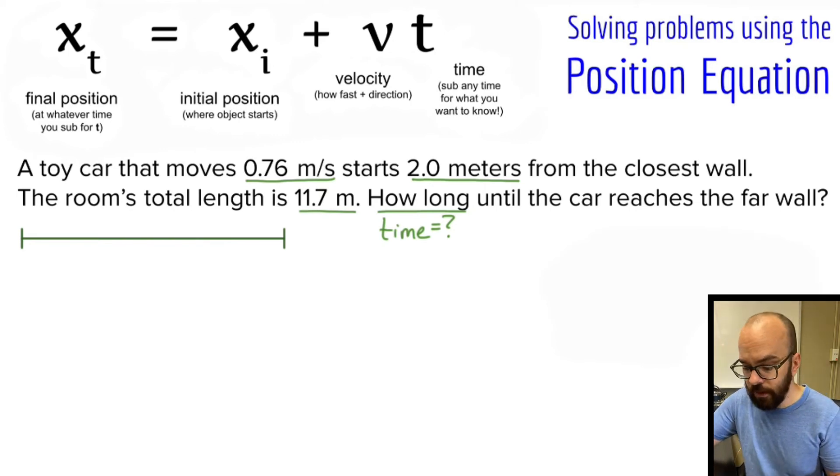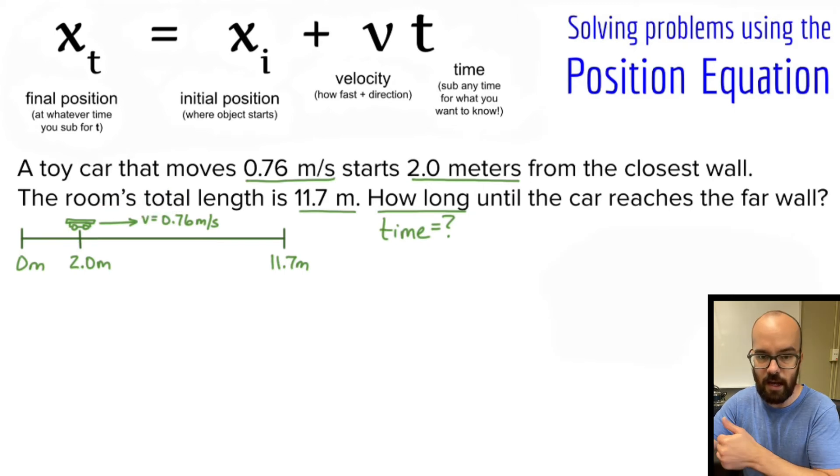Here I have the total length of the room. Let's define this as the zero position - that's going to be the close wall. And the far wall then would be at a position of positive 11.7 meters. So this whole length right here is 11.7 meters. Now the car starts 2.0 meters from the closest wall, so I'm going to write where that car's starting position is at 2.0 meters from here. Think about this like a number line: this is at a position of zero, car starts at position two, and then the far wall is at position 11.7. I know my car is moving 0.76 meters per second in this positive direction, which I'm defining as toward the right.